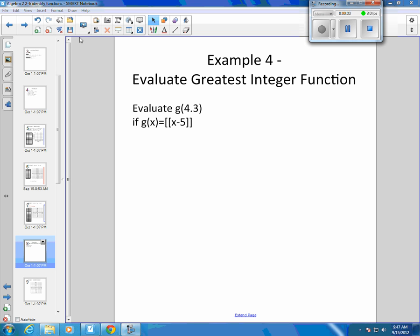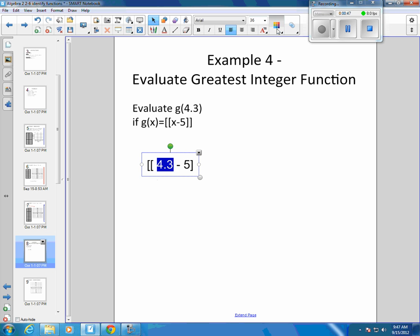So we're going to take and fill those. We want it to be 4.3 minus 5. So we filled in this 4.3 right here. So that's going to be equal to the greatest integer of 4.3 minus 5. 4.3 minus 5 is a negative 0.7.